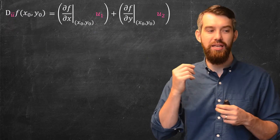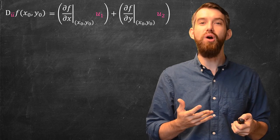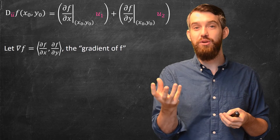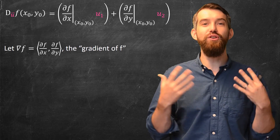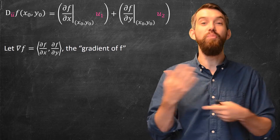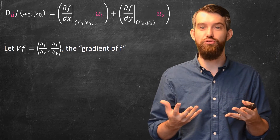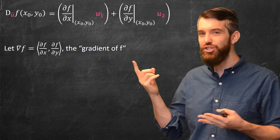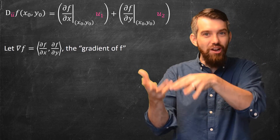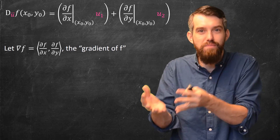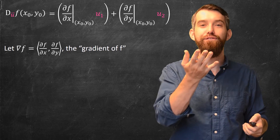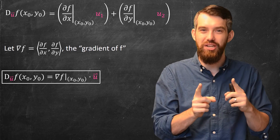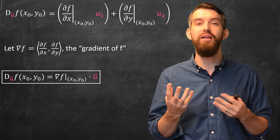I'll introduce new notation: a vector called the gradient of f. This vector has first component equal to the partial derivative with respect to x, and second component equal to the partial derivative with respect to y. It's a vector-valued function — at any input (x, y) you get a vector whose components are the partial derivatives. Then our expression is the first component of the gradient times u₁ plus the second component times u₂, which is a dot product.